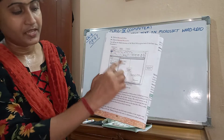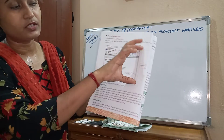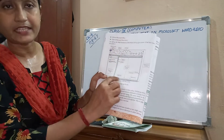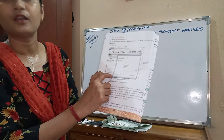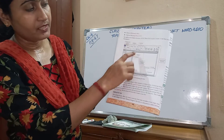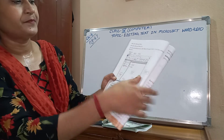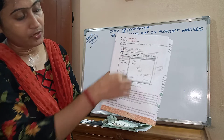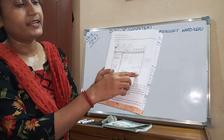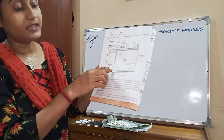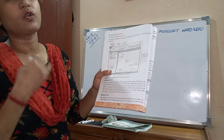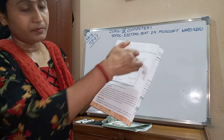The portion where we write only is called the Document Window. The total window is the Application Window, and inside it, the part we use for writing is the Document Window. There are also two rulers — a vertical ruler and a horizontal ruler. And here is the vertical scroll bar and the horizontal scroll bar, which we can use to move the page up and down.